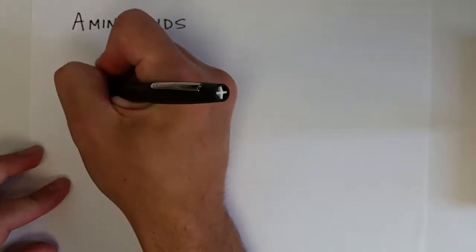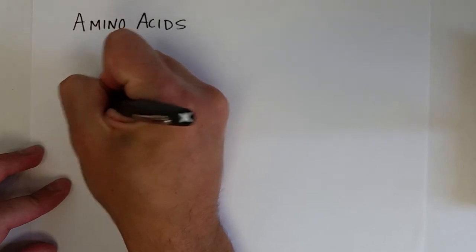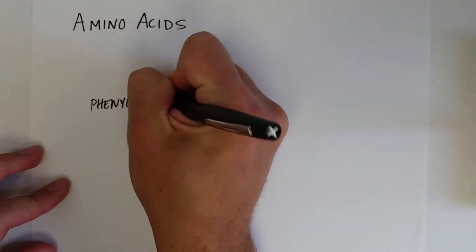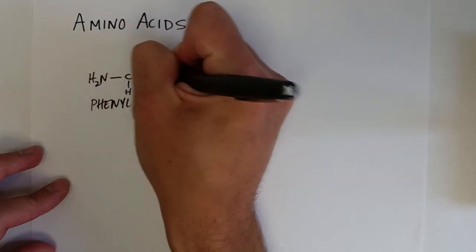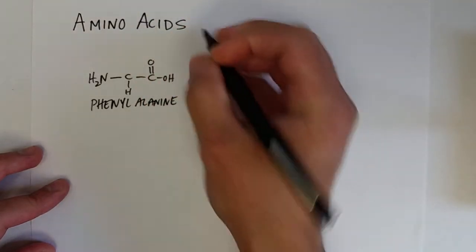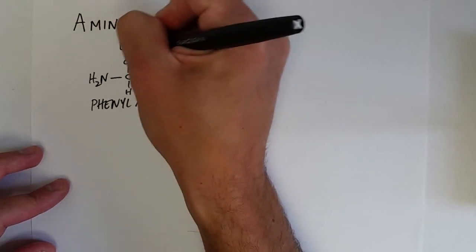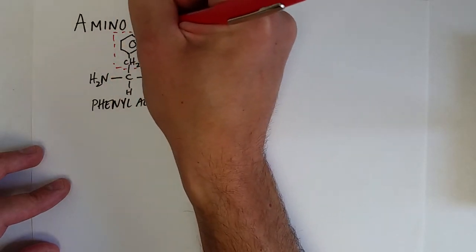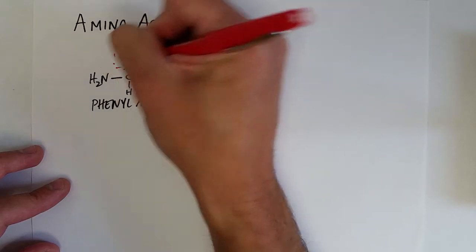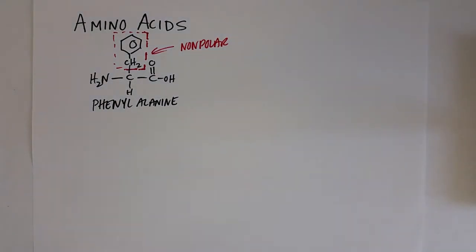There are a couple of different classifications for amino acids depending on what their side chain is. Let's take a look at phenylalanine — it has the amine group and the carboxylic acid group, and its R group is just a CH2 and then an aromatic ring. Since its R group is all hydrocarbons, it is completely nonpolar. That is one classification: nonpolar amino acids, where their side chain is nonpolar.